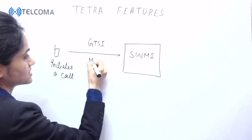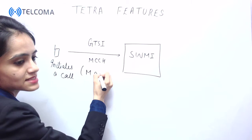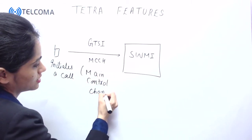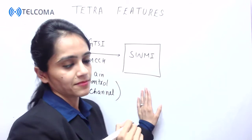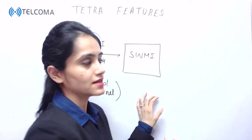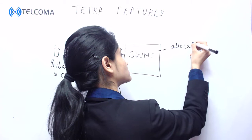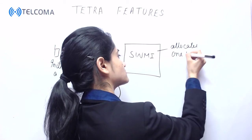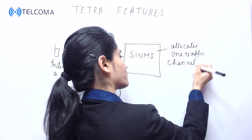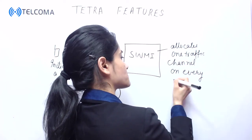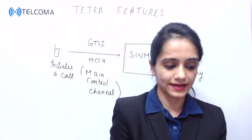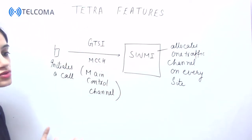A channel is required to send this message — this is the MCCH, which stands for Main Control Channel. SWMI then allocates one traffic channel on every site within the group area and invites more mobiles to initiate a call.